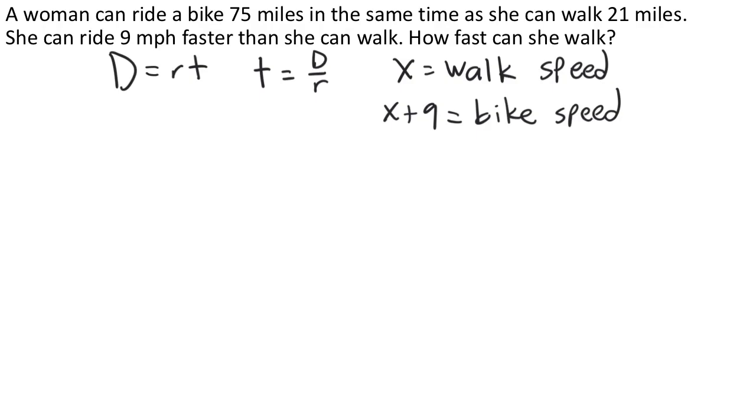We weren't told very much about time in this situation, but what we do know is that it takes this woman the same time to do two tasks. In other words, the time for her to walk is equal to the time for her to bike. We have our D over R expression, which is the same as time, and so we can use that to incorporate the walking speed and the biking speed into the equation that we just created.